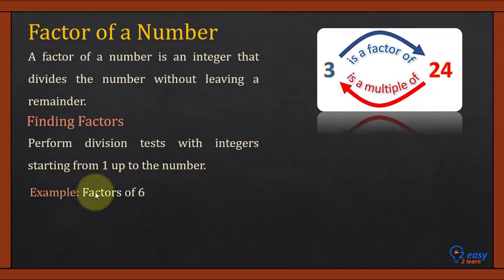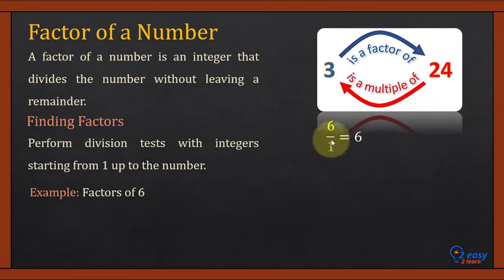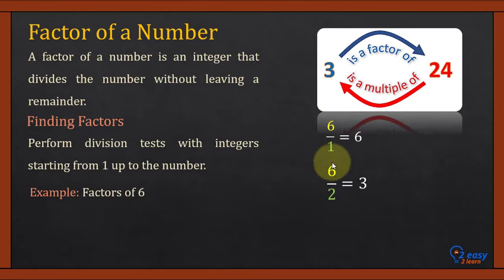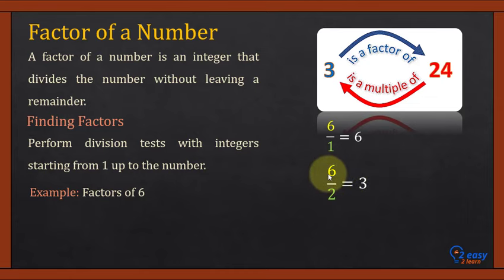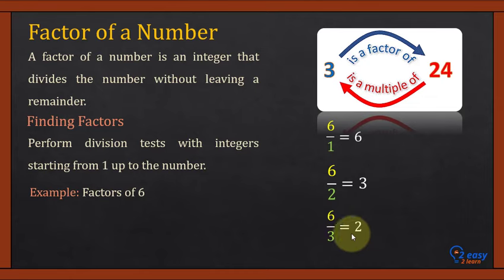Let's find the factors of 6. We'll divide 6 by integers starting from 1. 6 divided by 1 gives an integer answer, so 1 is a factor of 6. 6 divided by 2 gives 3, which is an integer, so 2 is also a factor of 6. 6 divided by 3 completely divides 6 and gives an integer answer, so 3 is a factor of 6.